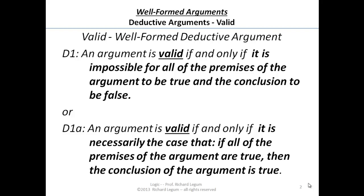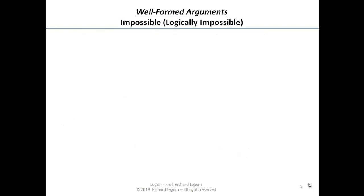In our first definition, we define validity in terms of it being impossible for two things to be true at the same time: all the premises are true and the conclusion is false. People sometimes get confused over this notion of impossibility, so let's turn to that for a moment.